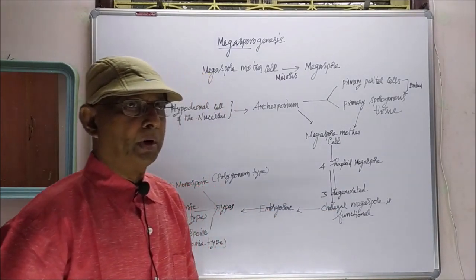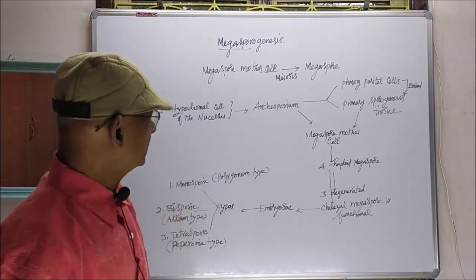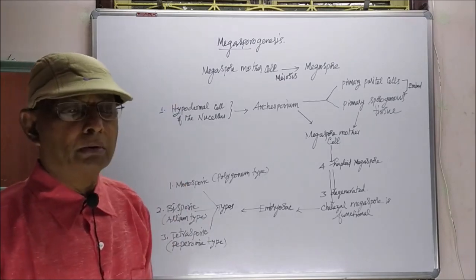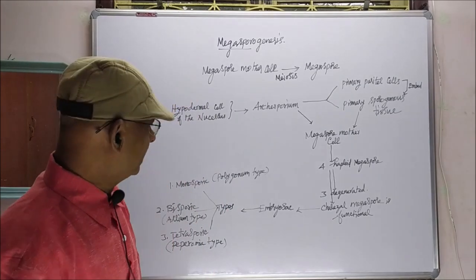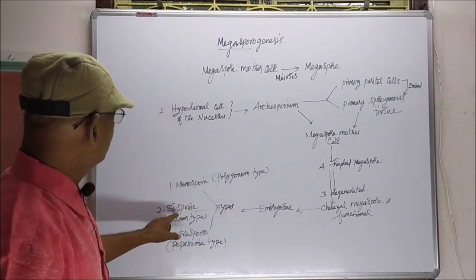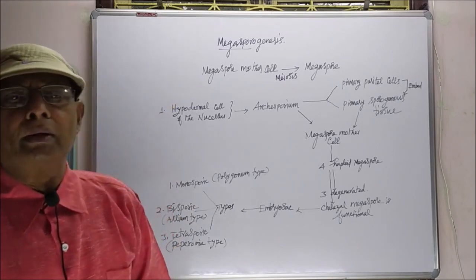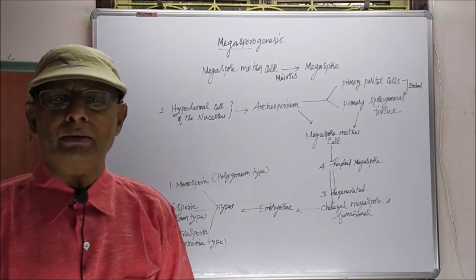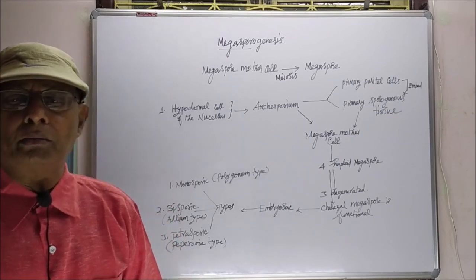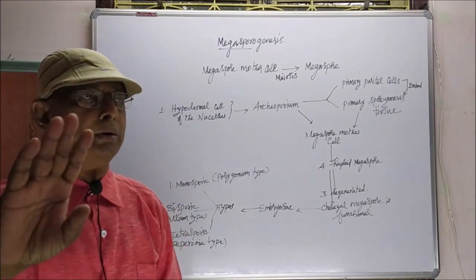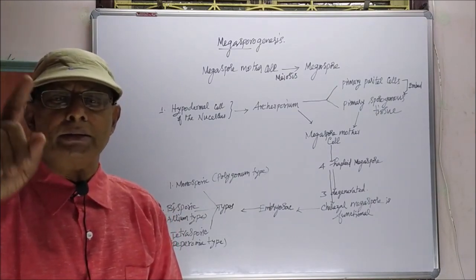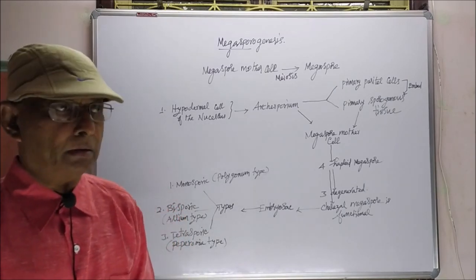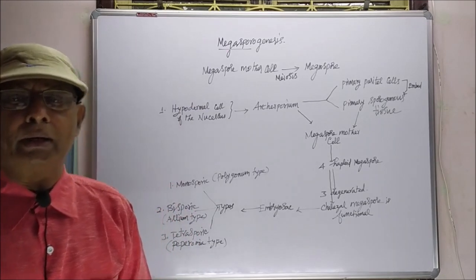So that is the process of Megasporogenesis. Based on the types of functional megaspore, the embryo sac is divided into three types: monosporic, bisporic, and tetrasporic. When the chalazal megaspore develops into the embryo sac, it is called monosporic.